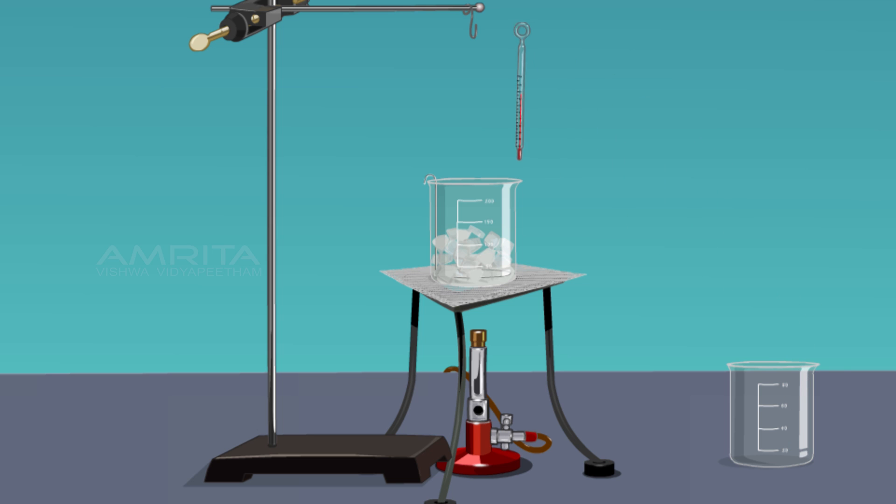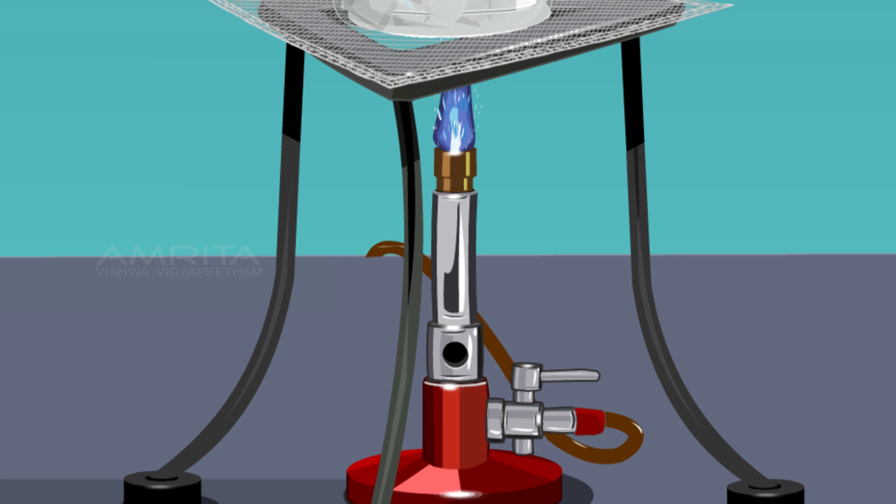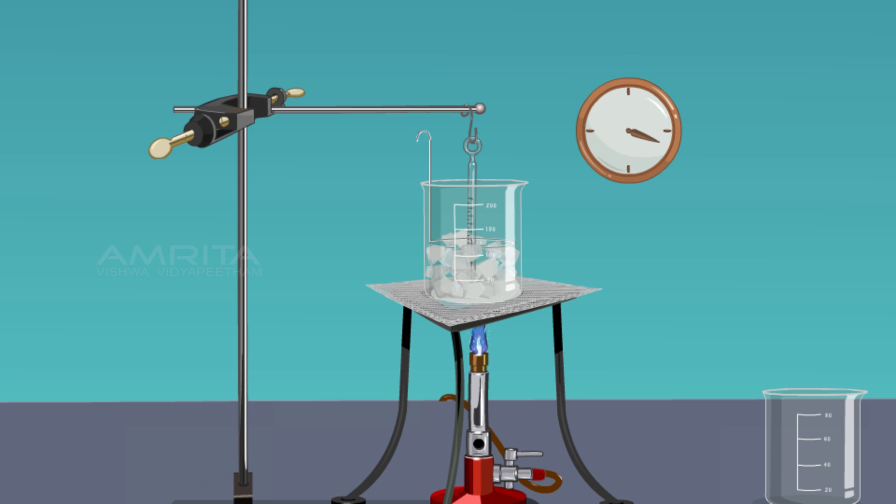Take a thermometer and suspend it with the help of a clamp stand so that its bulb remains in the middle of the ice cubes. Heat the ice cubes at a moderate temperature using a Bunsen burner and stir continuously to keep a uniform temperature throughout.